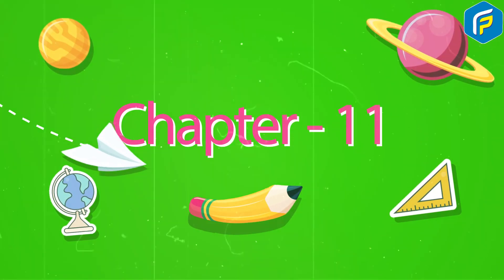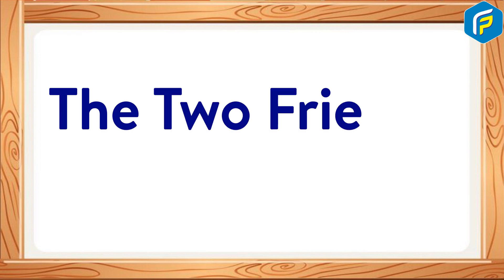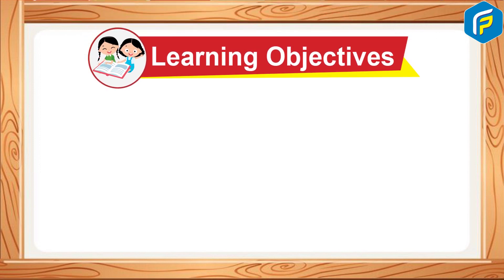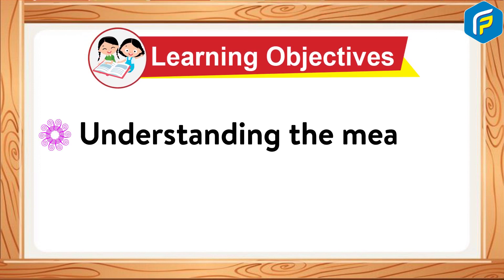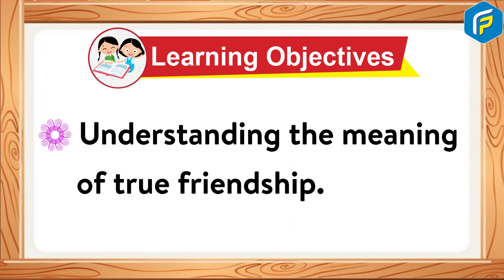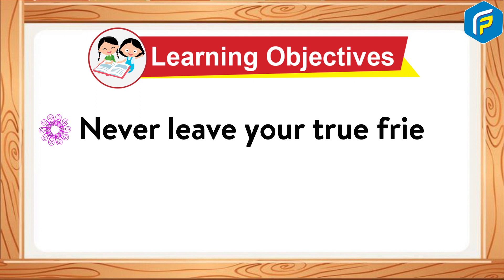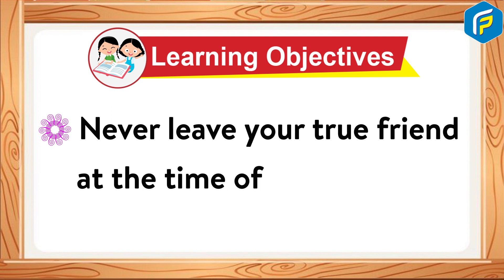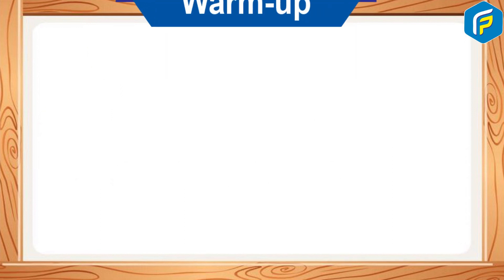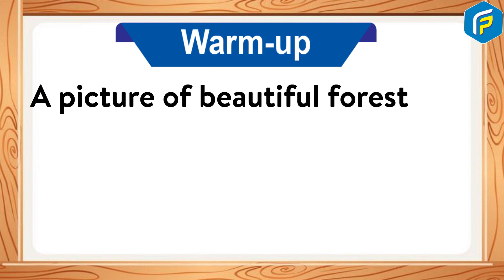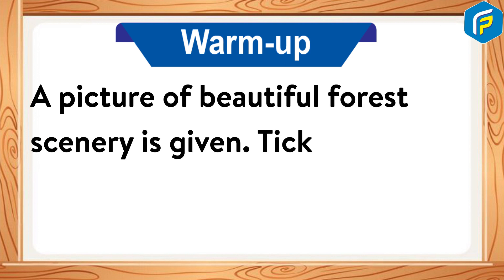Chapter 11: The Two Friends and the Bear. Learning objectives: one, understanding the meaning of true friendship; two, never leave your true friend at the time of need. Warm up: a picture of a beautiful forest scenery is given.